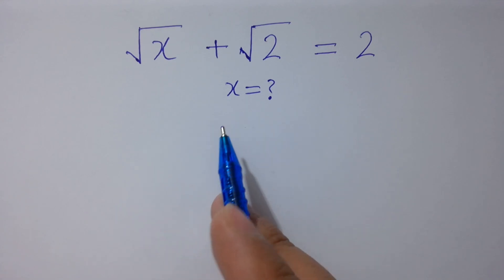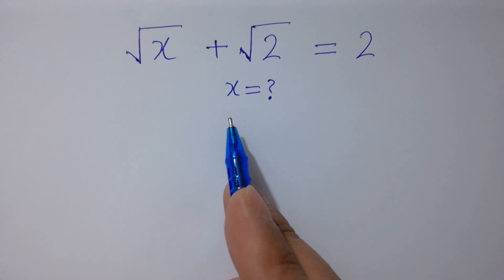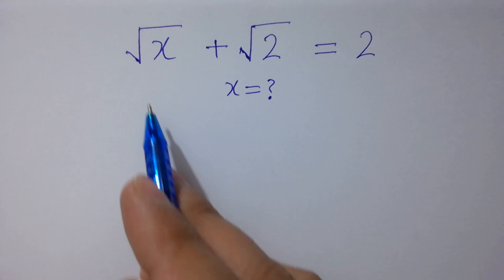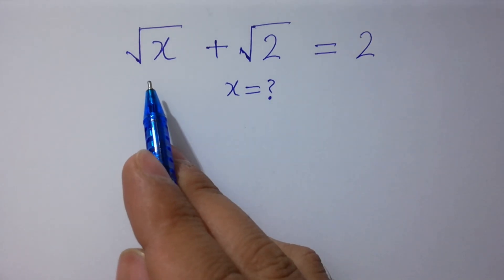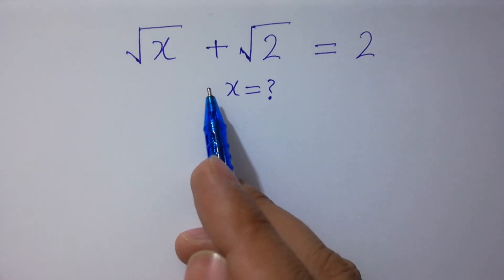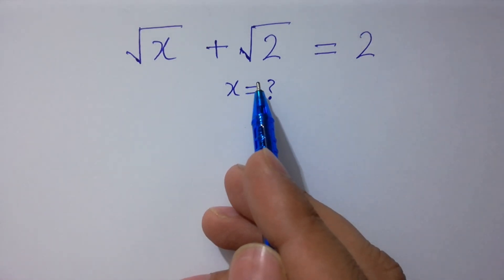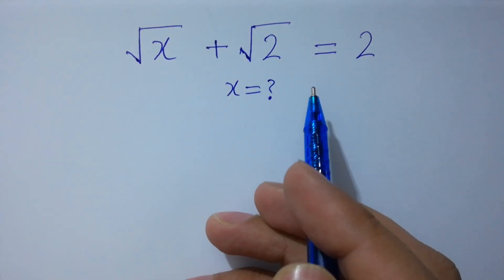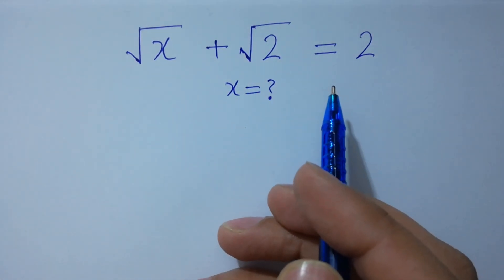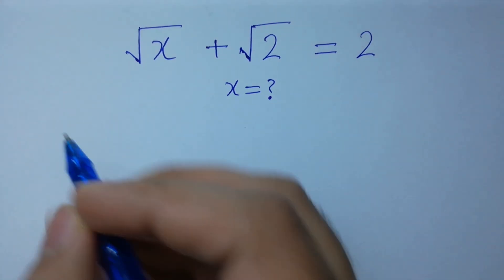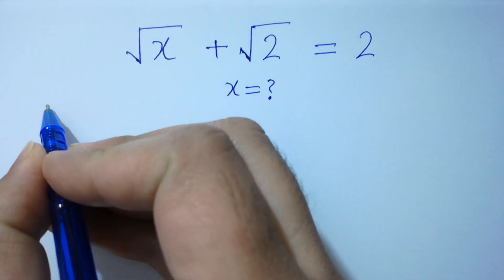Hello friends. Find the value of x if square root of x plus square root of 2 equals 2. Let's have a solution.